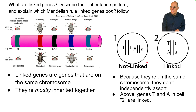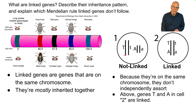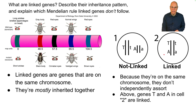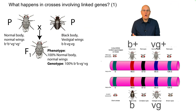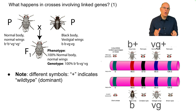For example, genes T and A in this cell over here are linked. In this other cell, they're not linked — they would independently assort, and the linked ones wouldn't. So what happens in crosses involving linked genes?